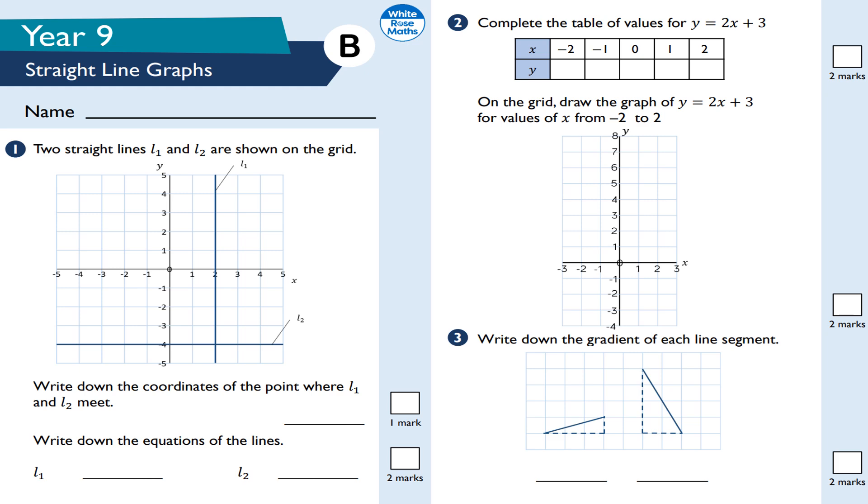Pause the video now, guys, and try this Year 9 Straight Line Graphs White Rose Maths Worksheet B, aimed at Key Stage 3 Maths, but this is appropriate and also ideal for Year 10 and Year 11. So GCSE Foundation and Higher Tiers, it's for the crossover topics for this topic.